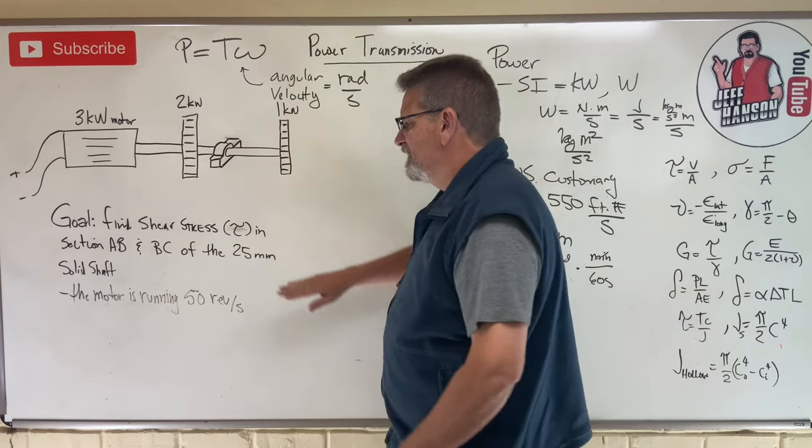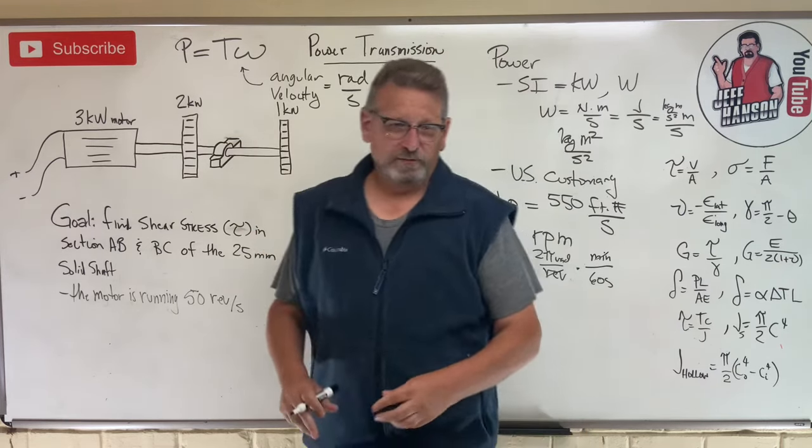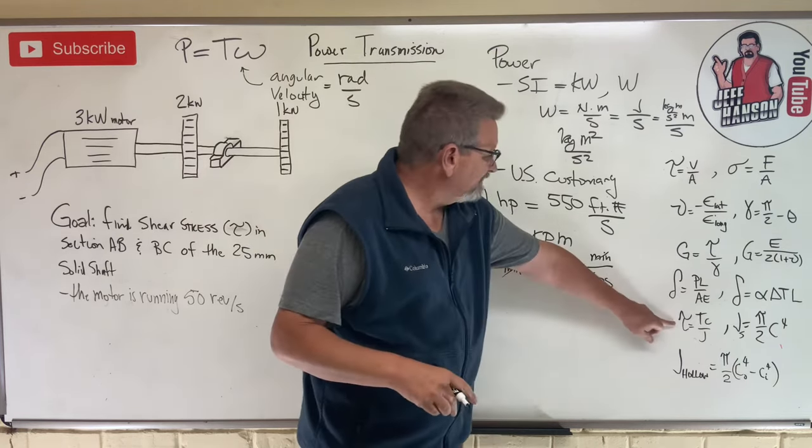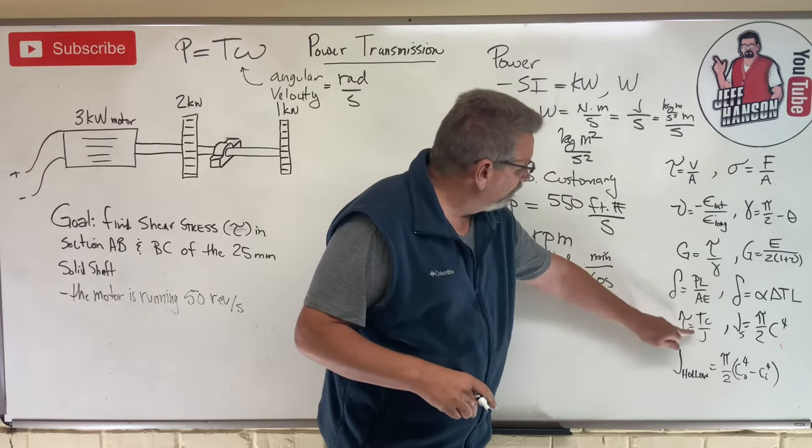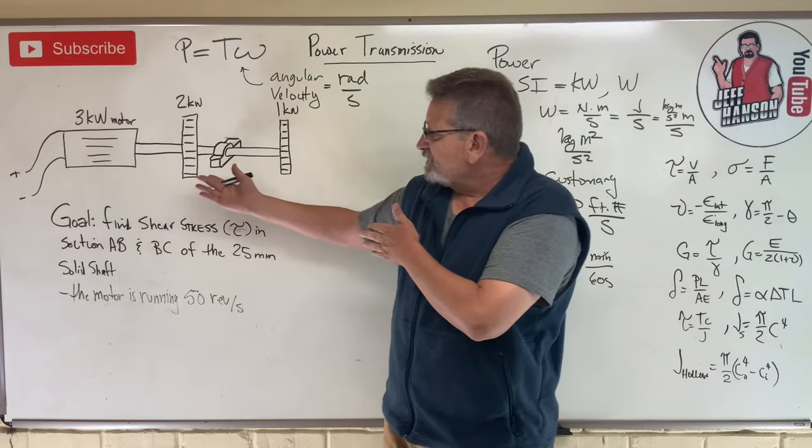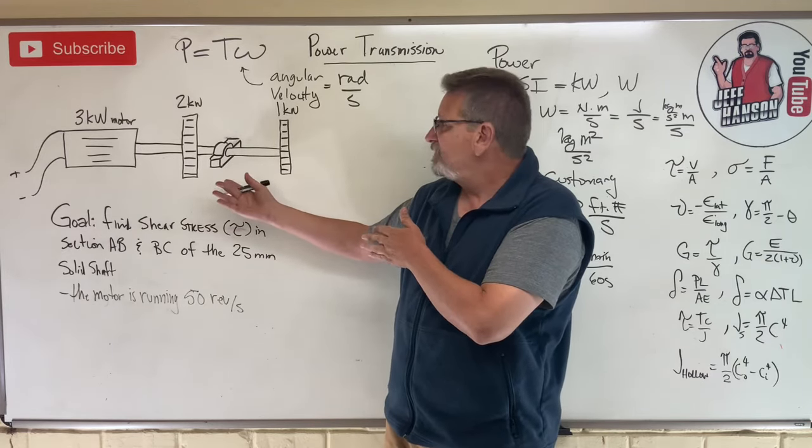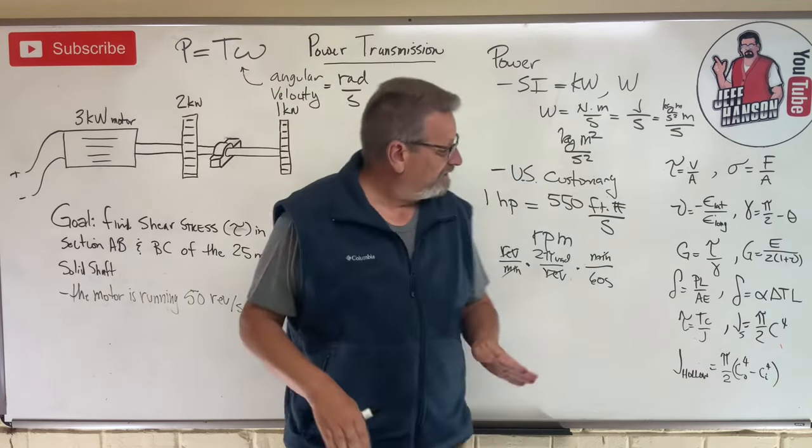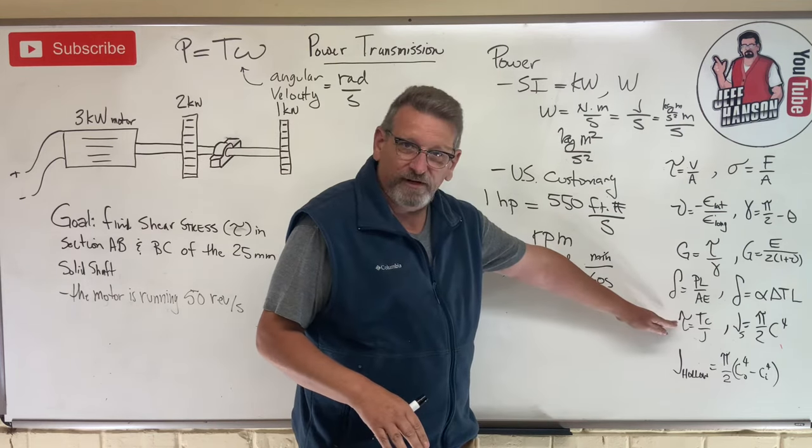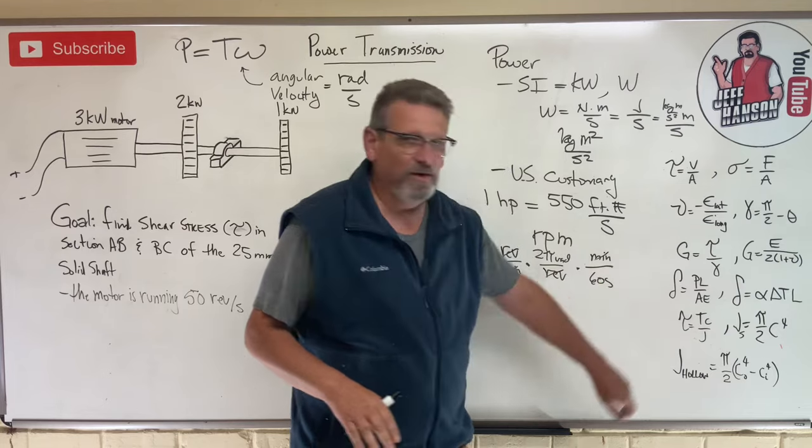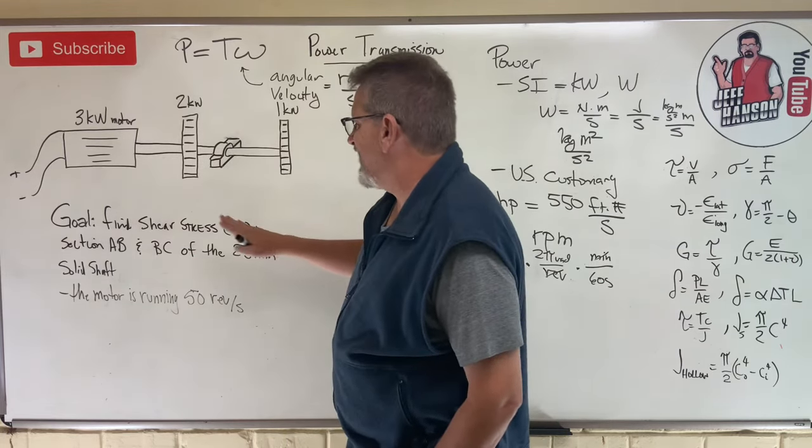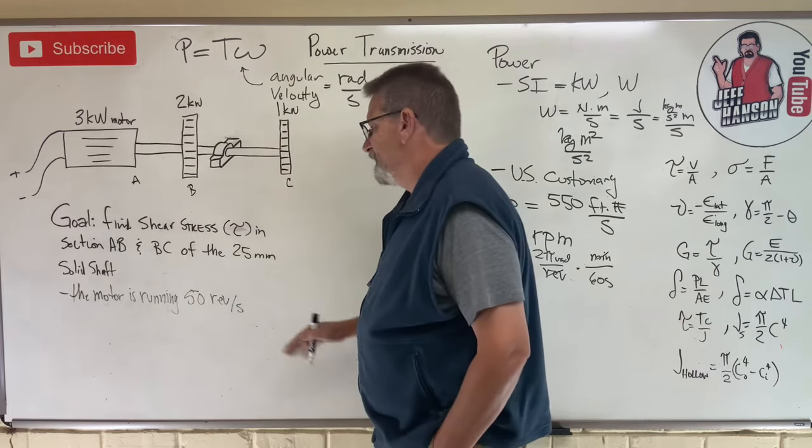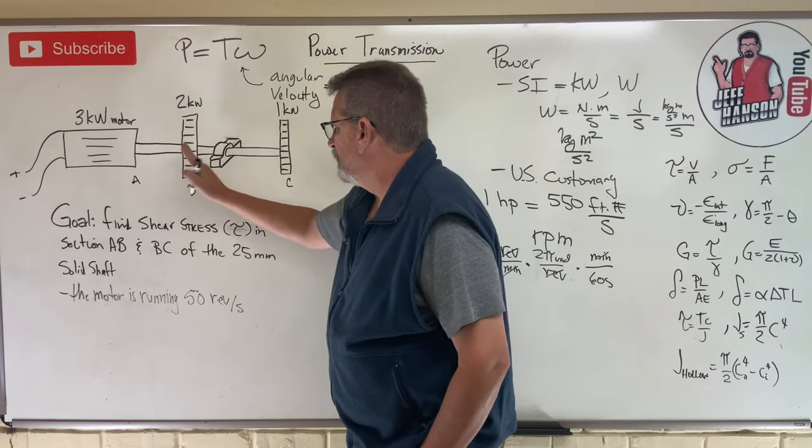So what do we got here? We want to find shear stress, tau. That's torsion, a twisting shaft, rotating. That sounds like shear stress, Tc over J. But notice in this problem, they don't give me torque anywhere. So what we're going to have to do is use our new equation to back that guy out to then substitute it into that equation so we can get tau, which is what we need. The goal - find shear stress tau in section AB and section BC. What's going on here?